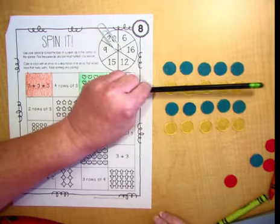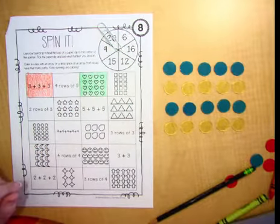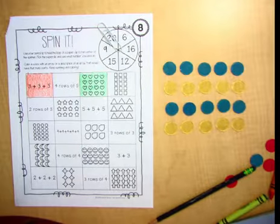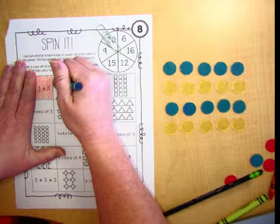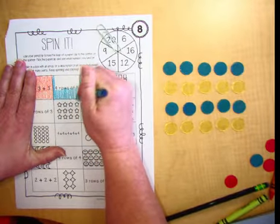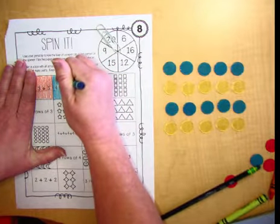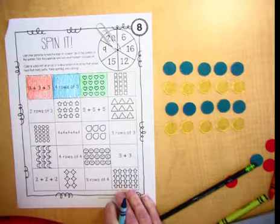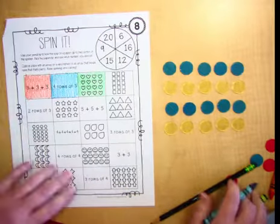So let's count by 5s and see if that equals the 20 that I spun. 5, 10, 15, 20. All right. It does equal 20. So I can color that one, that box too. So you're going to continue playing this until you get all of them colored. And you might eventually spin something that you don't have up here. So you just keep spinning until you get what you need.